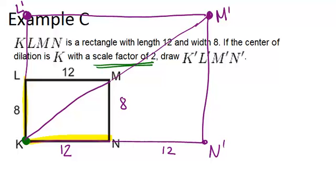Now, the only thing we haven't labeled yet is K prime, and K prime is going to be in the same exact location as K. Because it was the center of dilation, it doesn't move.